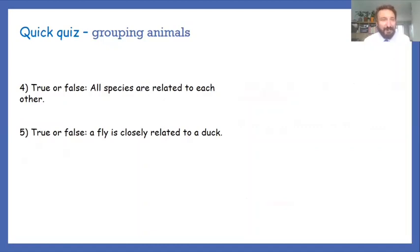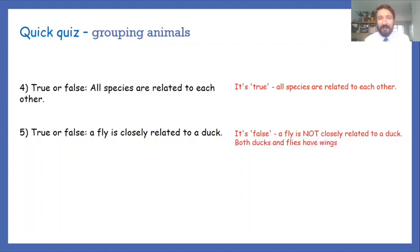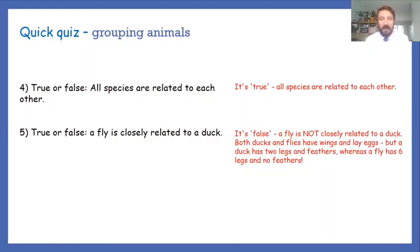So you're back already. Number four, true or false? All species are related to each other. Well we discussed that right at the start of this session. It is true. All species are related to each other in a strange kind of family. Number five, true or false? A fly is closely related to a duck. And I know you know the answer is false because a fly is not closely related to a duck. Both ducks and flies have wings and lay eggs, which we discussed, but a duck has two legs and feathers whereas a fly has six legs and no feathers.